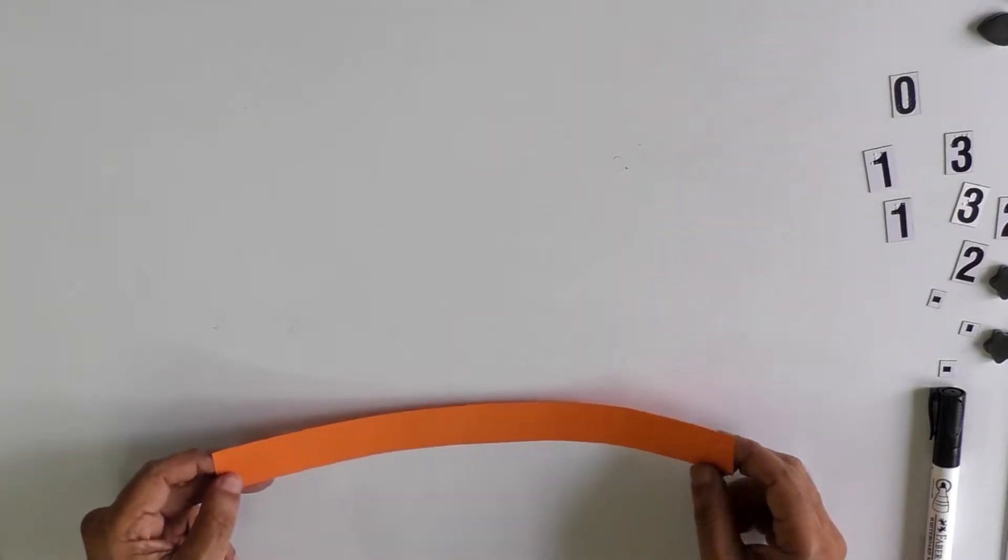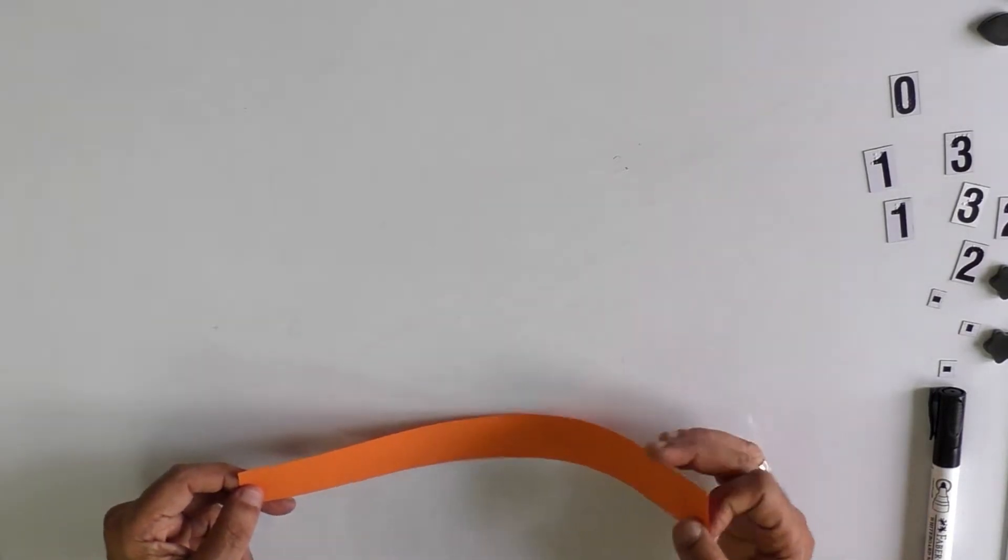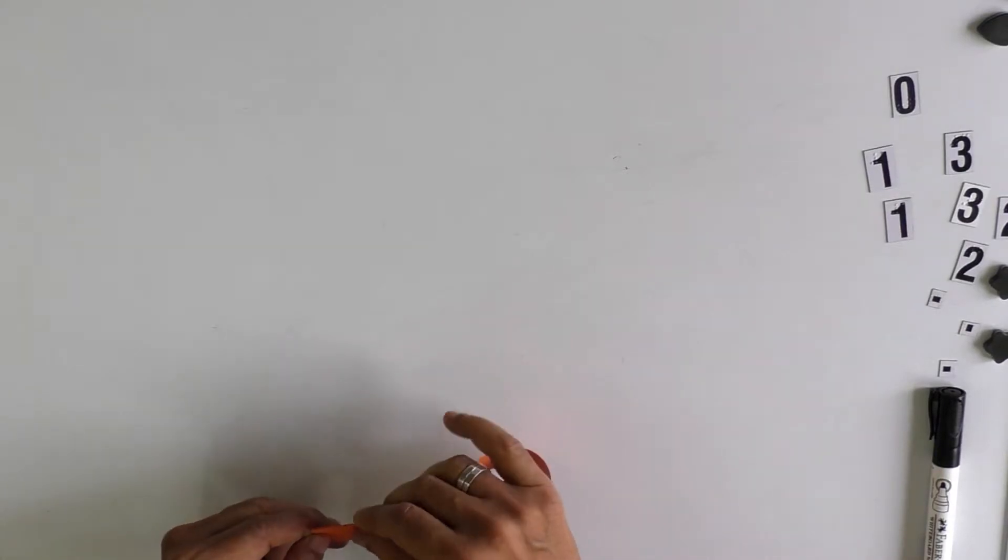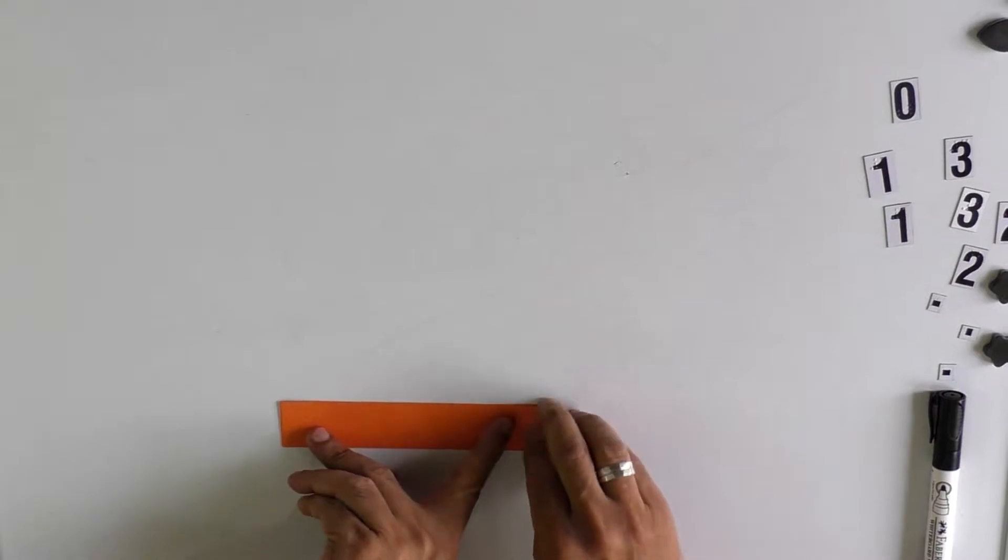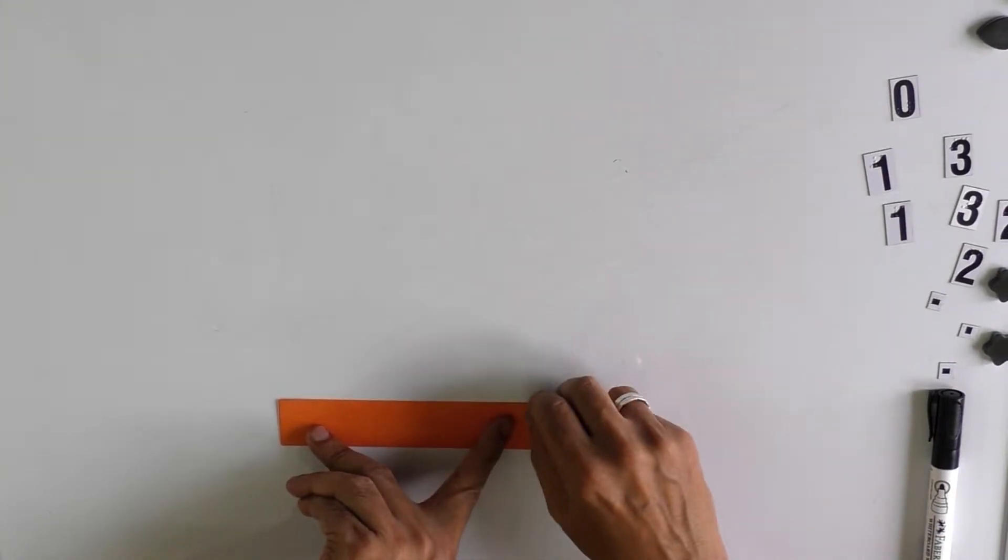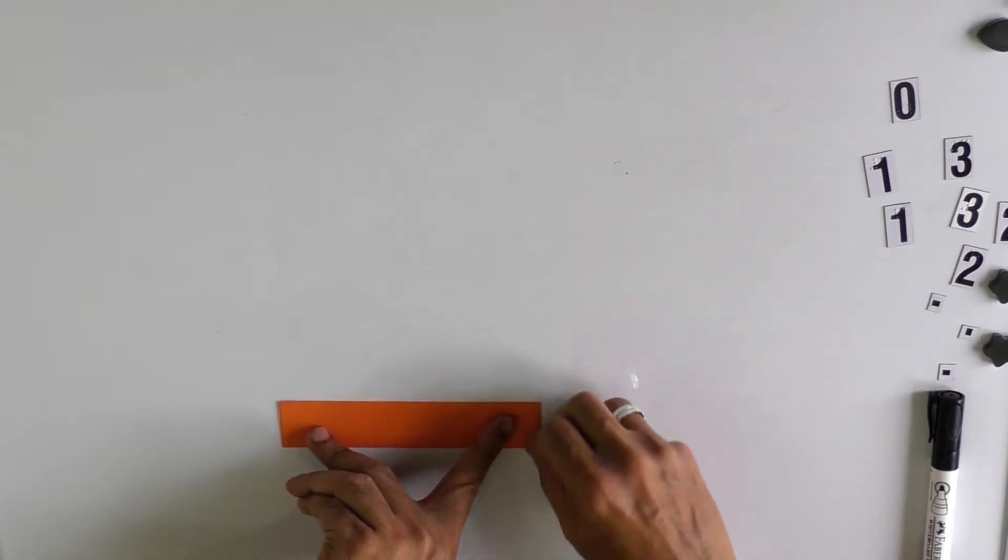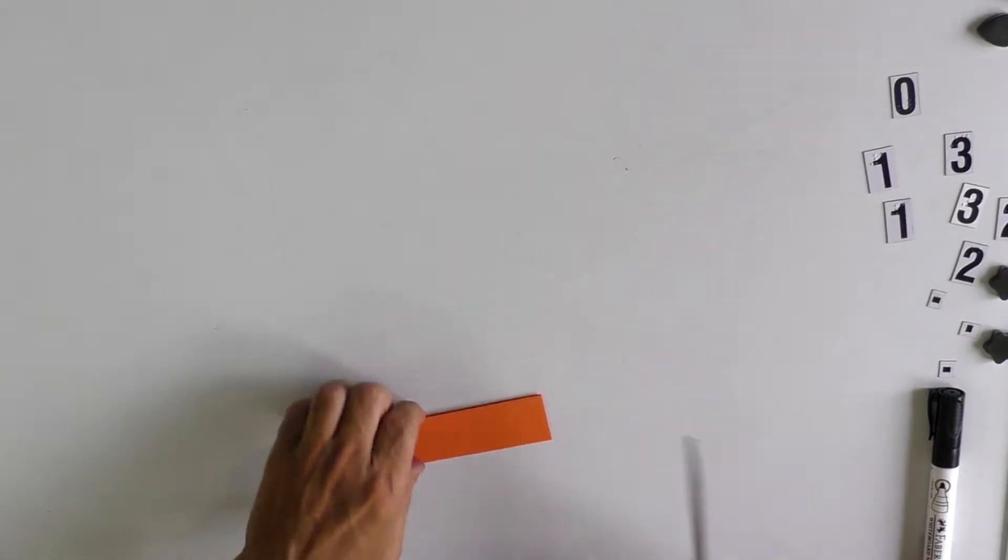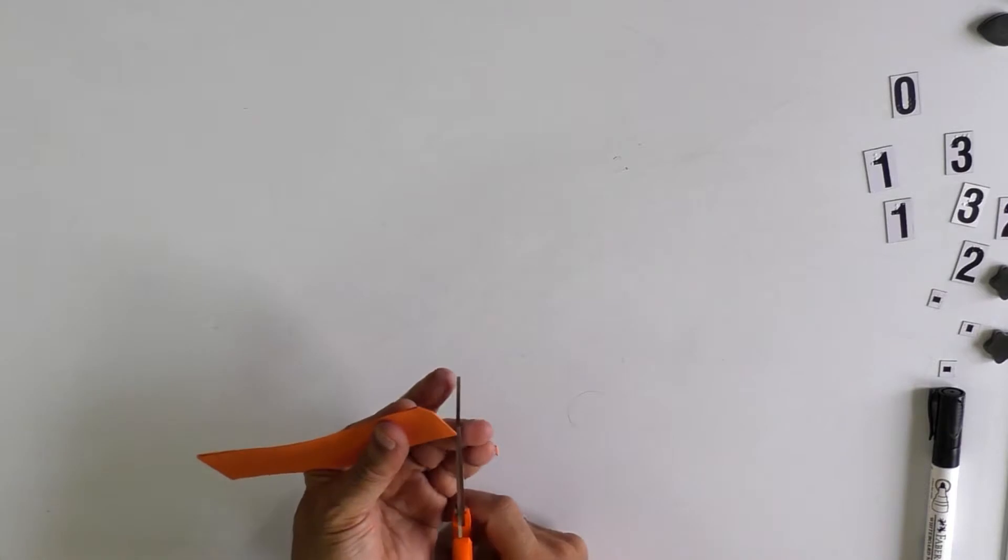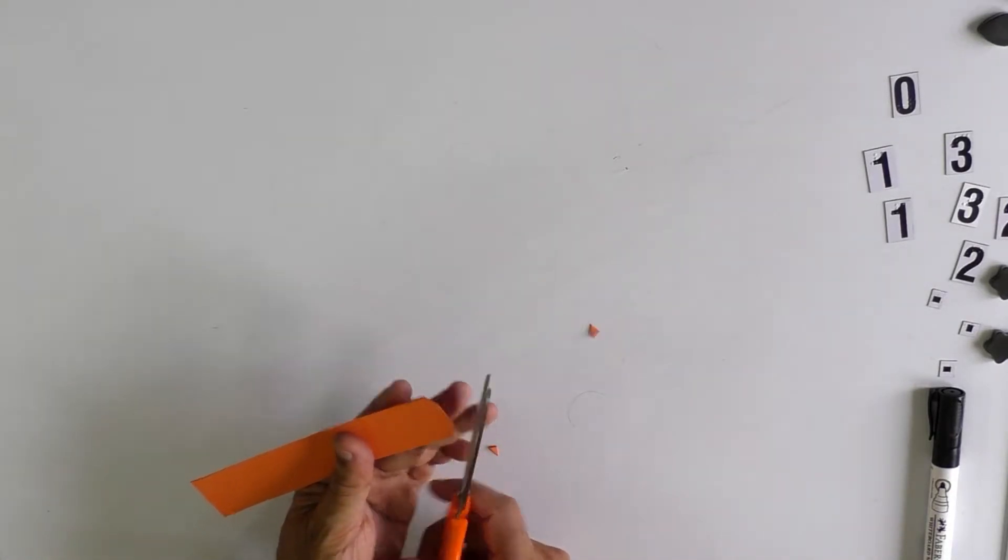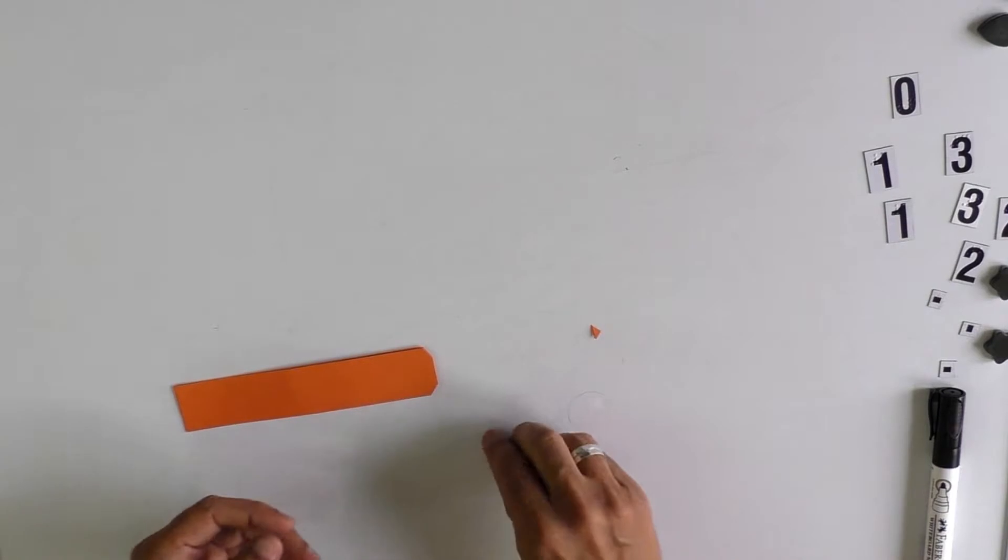Take a paper strip and fold it into two equal parts. In order to indicate this center portion, we can clip the corners. This will help the child identify the center portion of this paper strip.